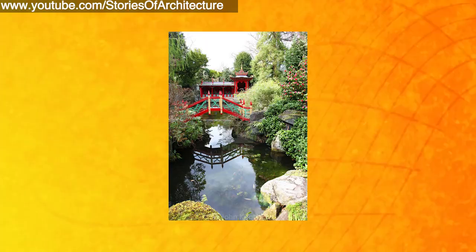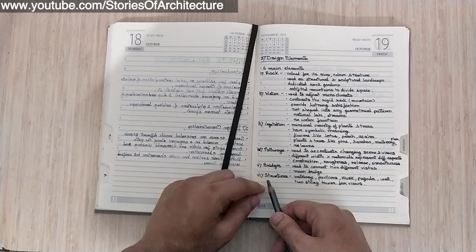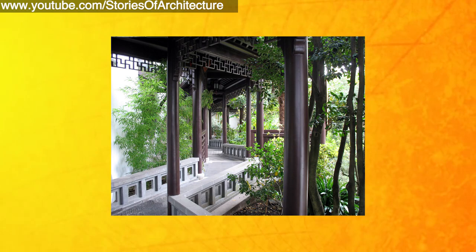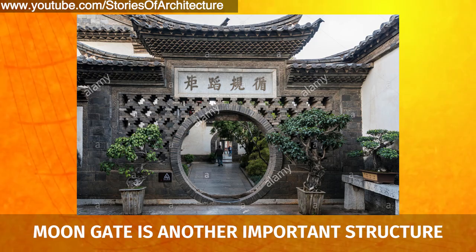The fifth design element is bridges, used to connect two different vistas — the moon bridge is an example. The sixth element is structures: walkways, pavilions, kiosks, pagodas, walls, and two-story towers for views can be found in Chinese gardens.